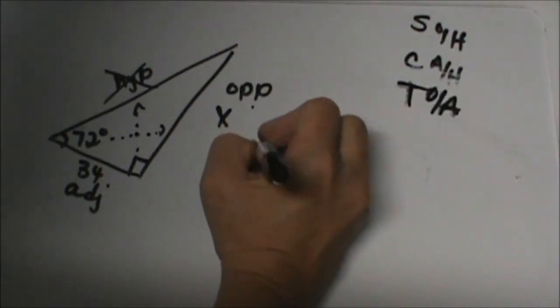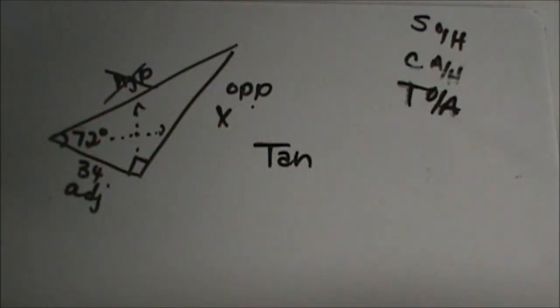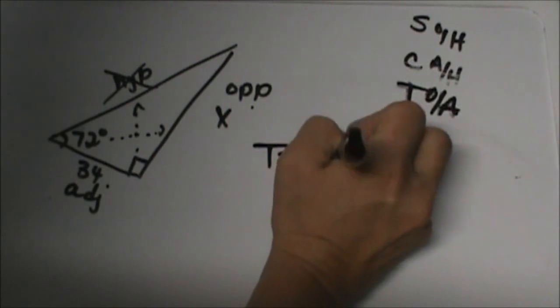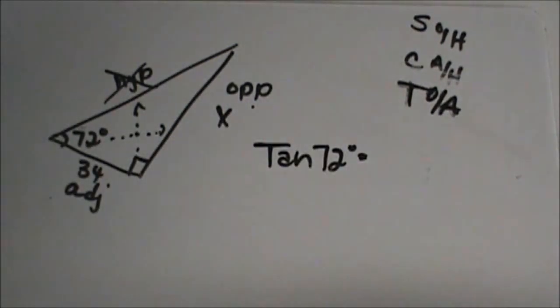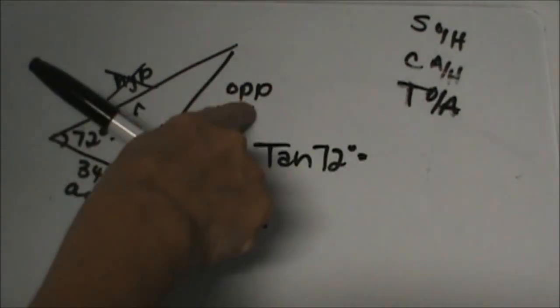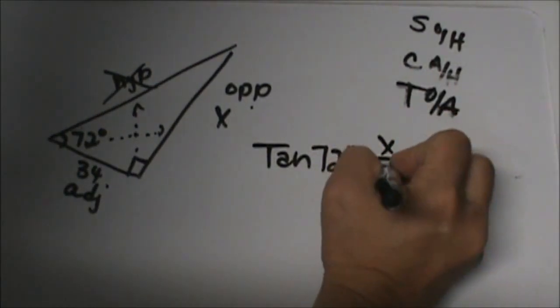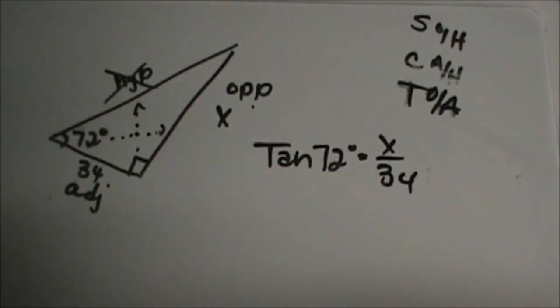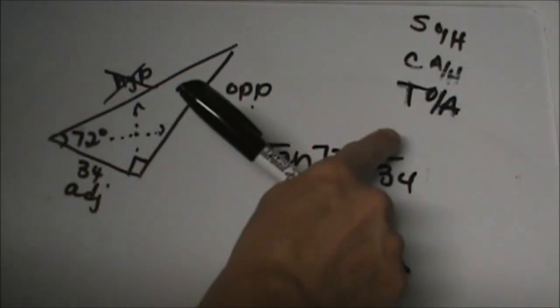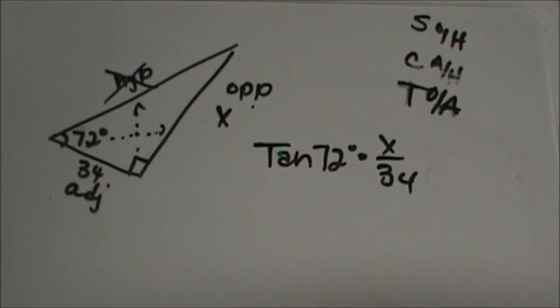We are going to set up the tangent of what angle? Tangent of 72 is equal to the ratio of which two sides? Opposite over adjacent. So I am going to have x over 34. So this one sets up as the tangent of 72 is equal to x over 34. Okay?